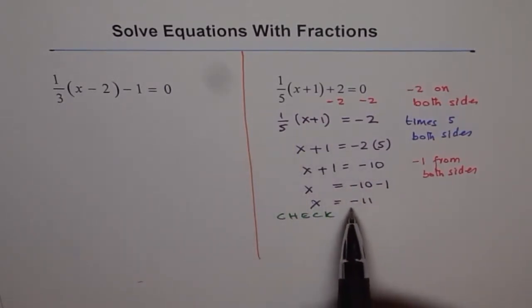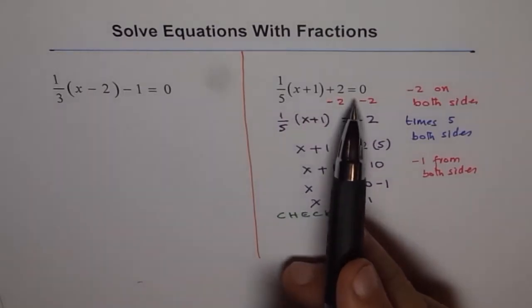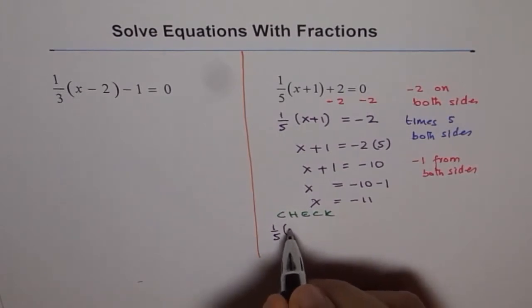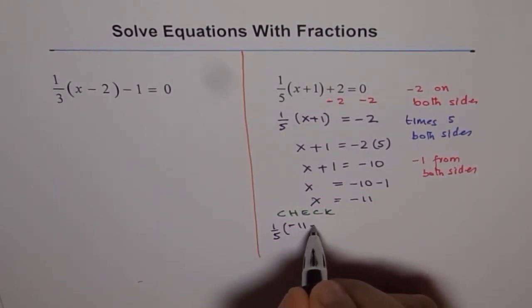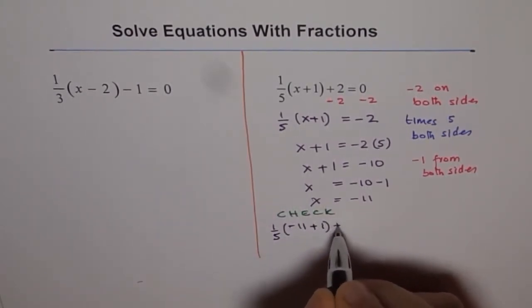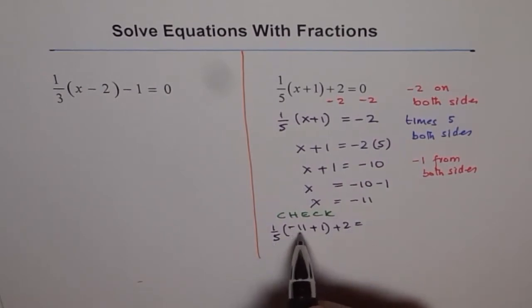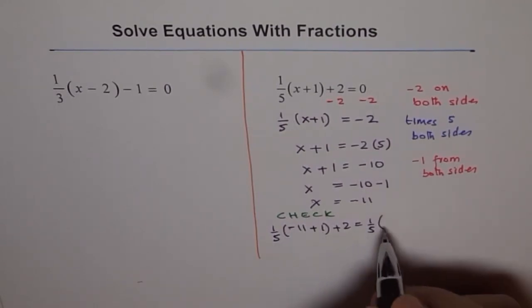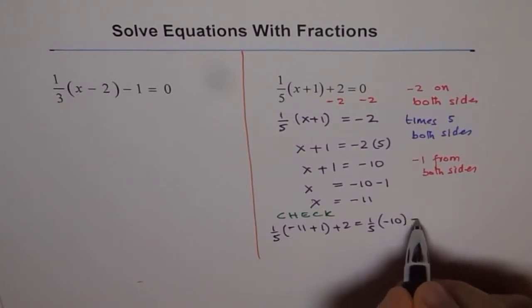In this case, if I substitute minus 11 for x, I should get 0. Let's do it. We have 1 over 5 times (minus 11 plus 1) plus 2. Now, minus 11 plus 1 is, remember, we have to do within brackets first. So, 1 over 5 times (minus 11 plus 1 is minus 10) plus 2.